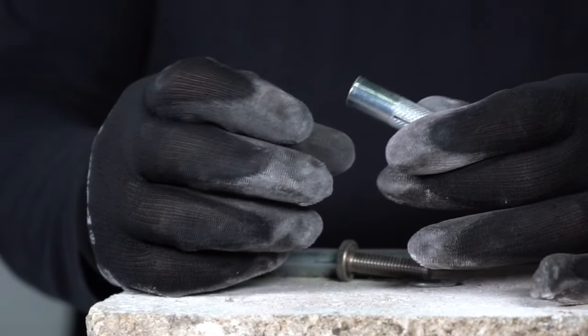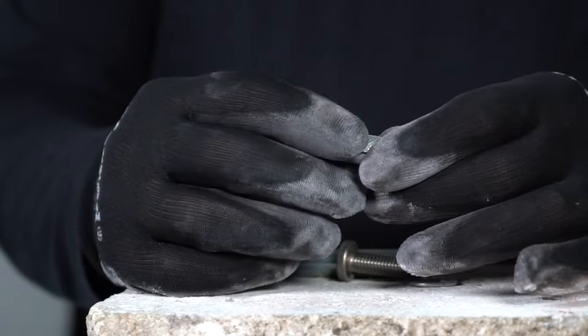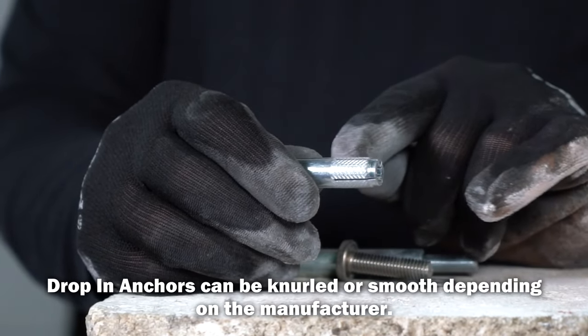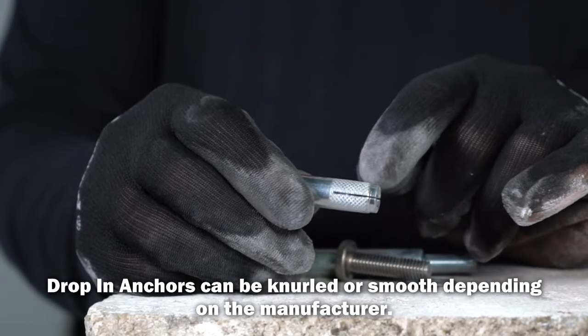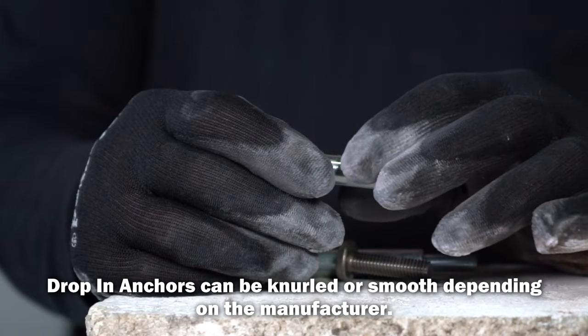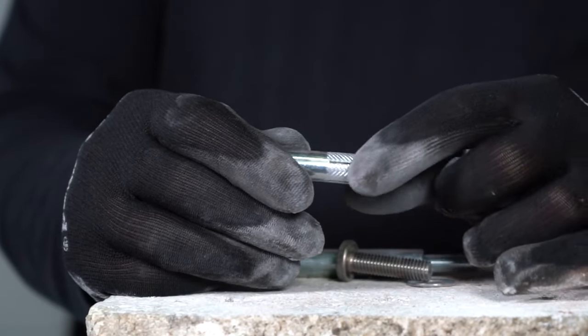Basically a drop-in anchor is made up of a smooth surface that you can see here with a knurled portion down here with these slits in the steel to allow the lower part of the anchor to expand.